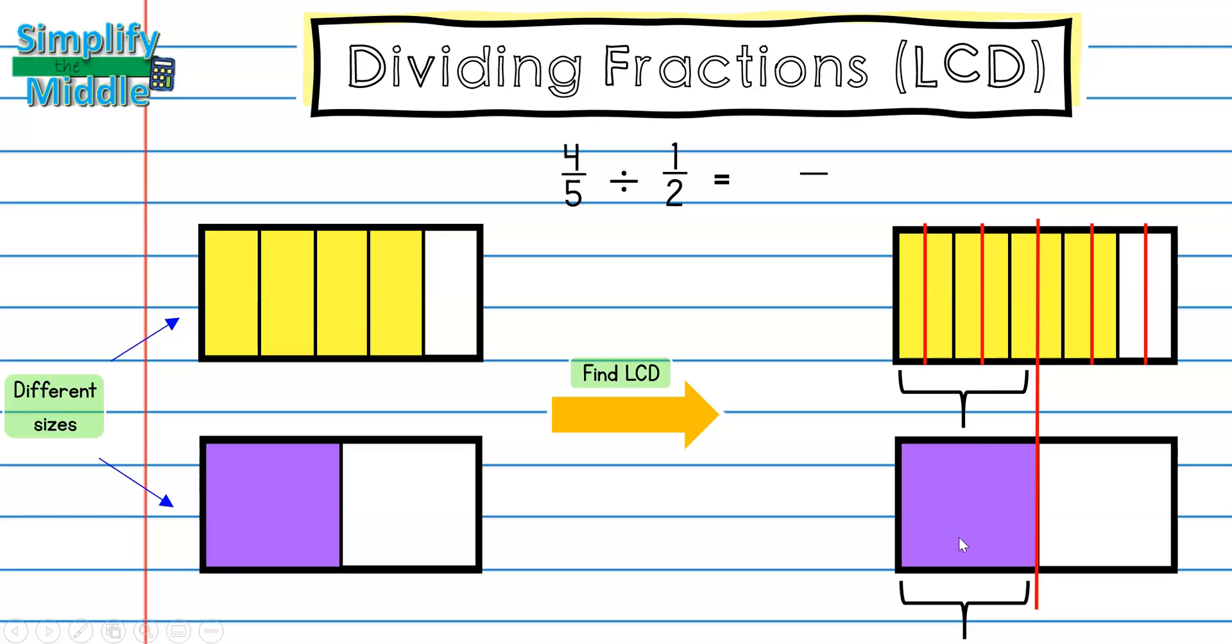So five pieces is the same size as one-half, which means I'm looking for groups of five. So I have one group of five and then I have one, two, three leftovers. So my answer is one whole and I have three left over out of a group of five, so my answer is one and three-fifths.